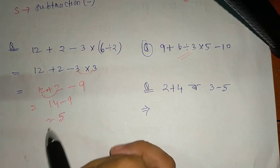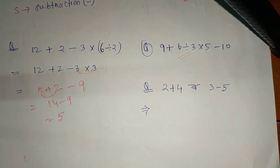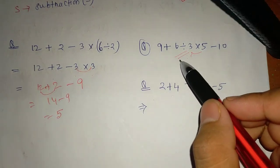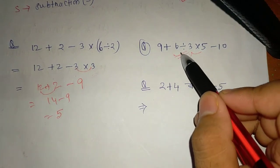So the answer is equal to 5. Next, if there's no bracket, we solve it step by step.